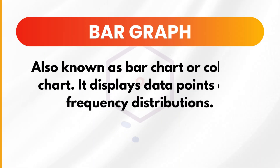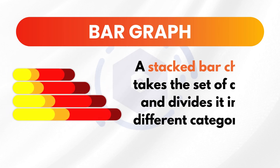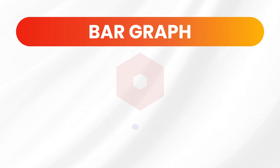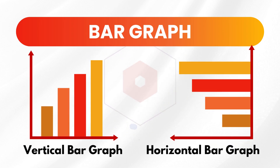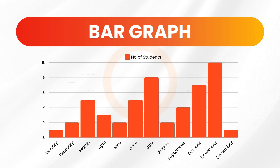Next is the bar graph, also known as a bar chart or column chart. It displays data points and frequency distribution. A stacked bar chart takes a set of data and divides it into different categories, and the bars can be plotted vertically or horizontally. An example of this is the birthdays of students per month — we can see in the bar graph that the month of November has the most number of celebrants.